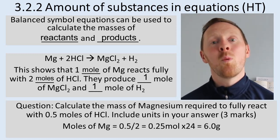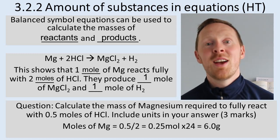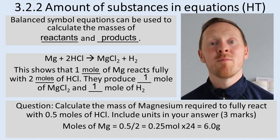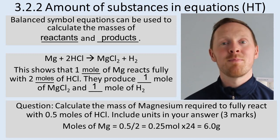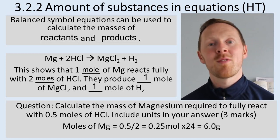You know one mole has a mass of 24, so therefore 0.25 moles must have 0.25 times 24 equals 6, 6 grams. So 6 grams of magnesium will fully react with 0.5 moles of hydrochloric acid.